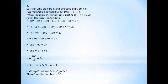9 minus x plus 10x, minus the bracket: so we have 9 minus x. The sum gives us: 9 plus x, minus x, plus x equal to 27.